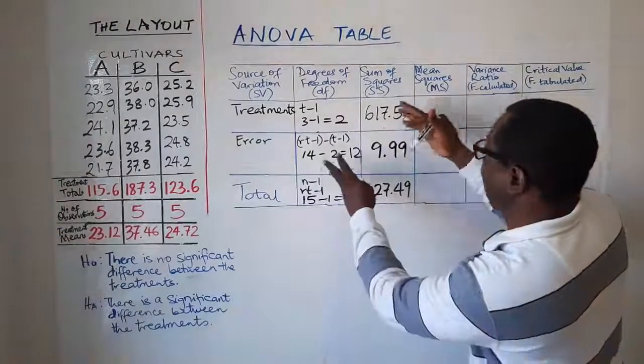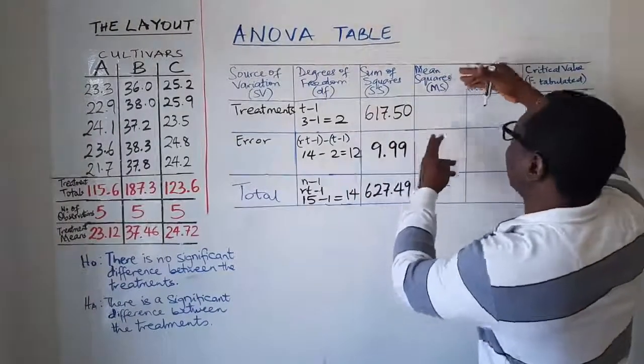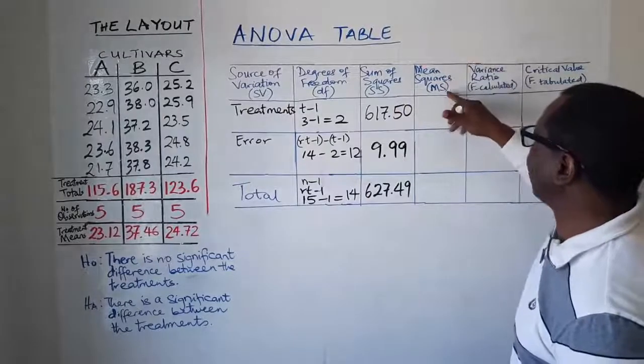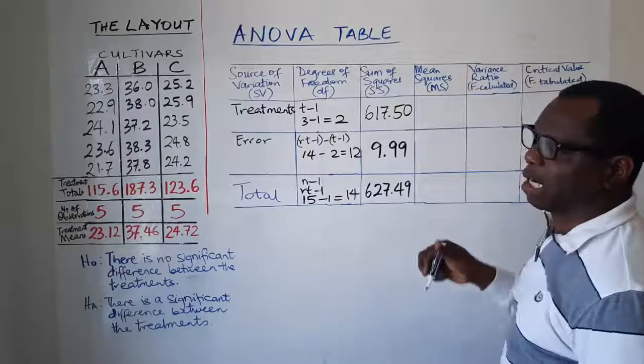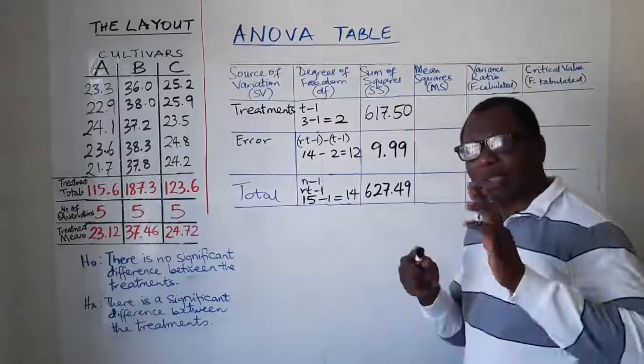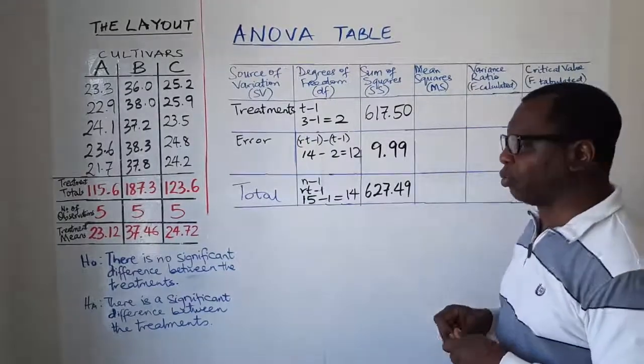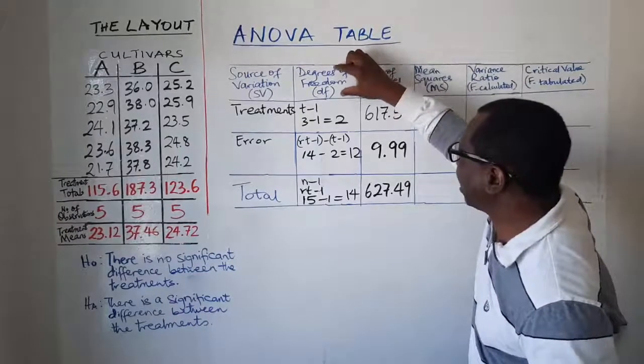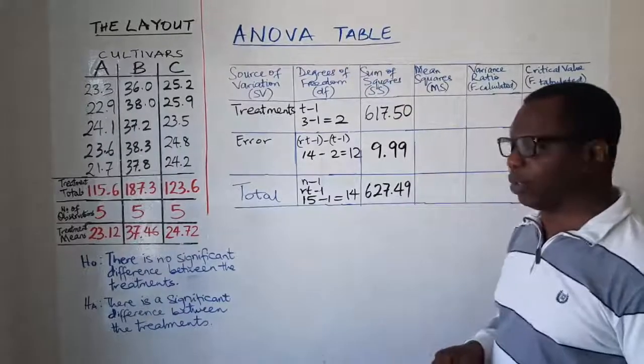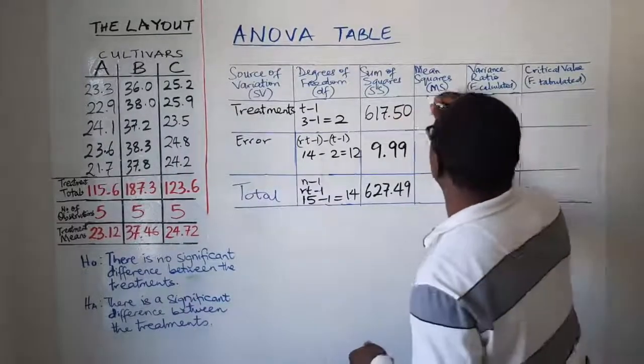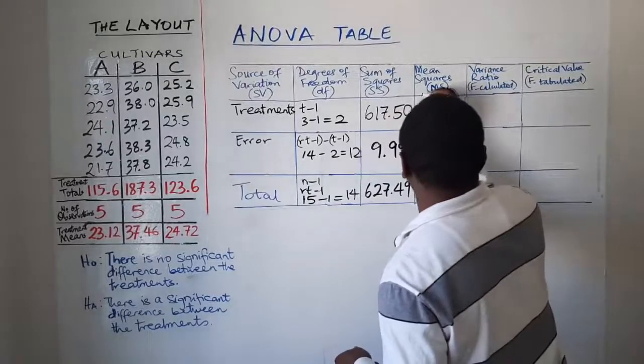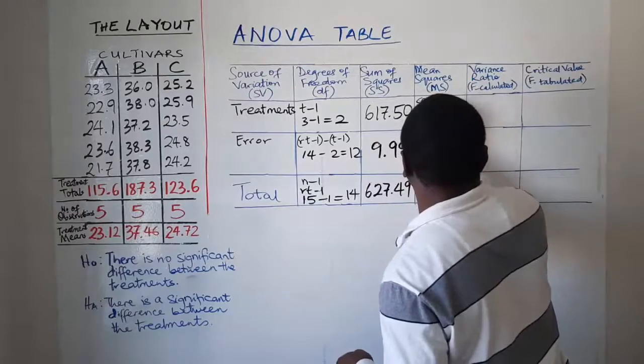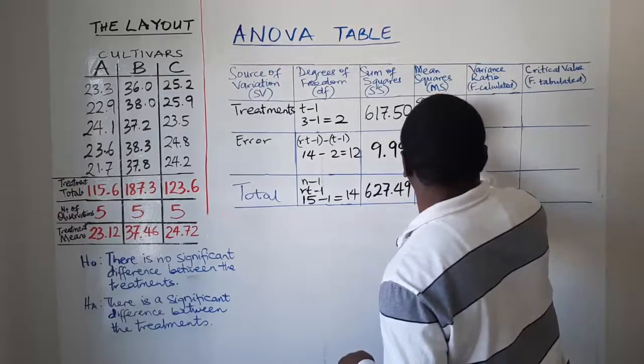Once you have that the next column in your ANOVA table is what we call mean squares, abbreviated as MS, mean squares. Now mean squares are very straightforward to compute. They are simply the sum of squares divided by the corresponding degrees of freedom.